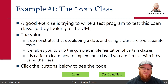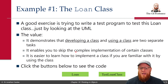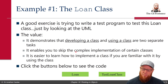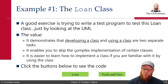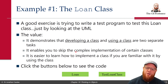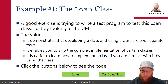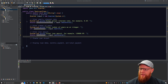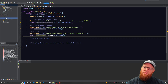This demonstrates that we really have two things: the development of a class and the use of the class — two separate things. The creator develops that class — that's the black box. We don't need to see that black box in order to use the class. It also enables us to skip the complex implementation when learning, and it's easier to learn how to implement a class if you're already familiar with it by using the class first. Let's jump right over to NetBeans where I have this started. The loan class is already created, but we want to try to use it without looking at it.